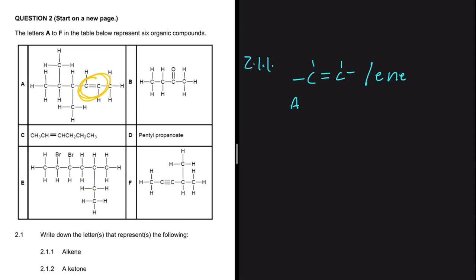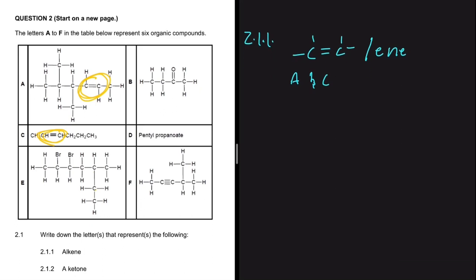Compound B has no double bond between carbon atoms. Compound C has a double bond, so C is also part of our solution. For D, there's no double bond and it doesn't end with 'ene'. For E, no double bond. For F, there's a triple bond, which is not what we're looking for. So the answer for 2.1.1 is A and C.